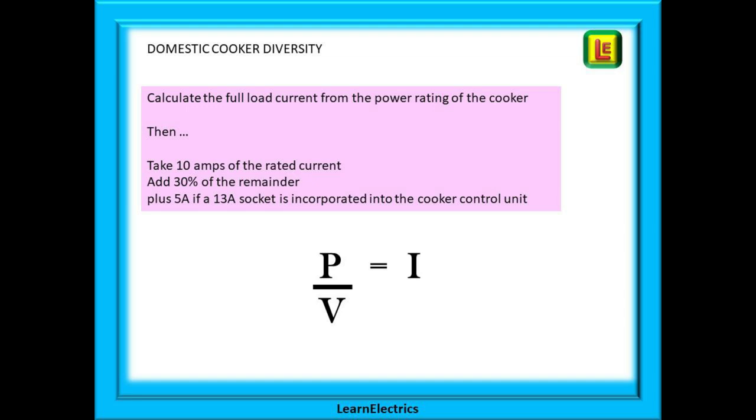Once I know the amps, I find the diversity for the cooker by doing the following: take 10 amps of the rated current and then add 30% of the remainder to that 10 amps. And if there is a 13 amp socket on the cooker control unit, we add another 5 amps onto the calculation, not 13 amps, just 5 amps. The socket will not be in use or drawing full load all the time.